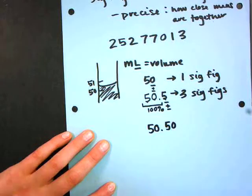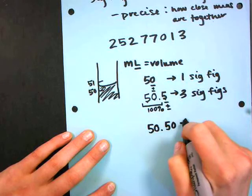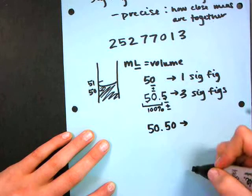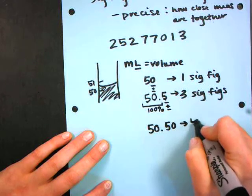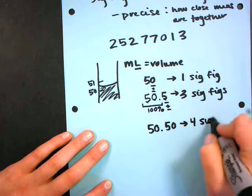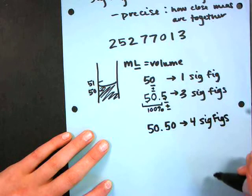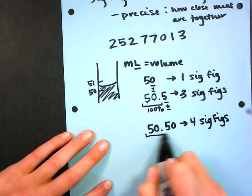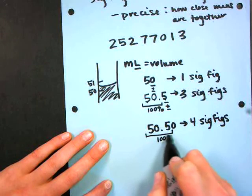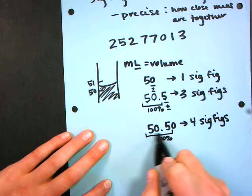So by some happy circumstance I get a little bit more precise and I add a zero to the end of my number. This is going to be four sig figs, and it's four because in the same way that I was 100% sure about the 50 in the beginning, now I'm adding on this .5.